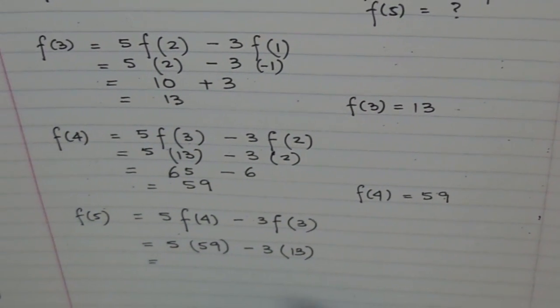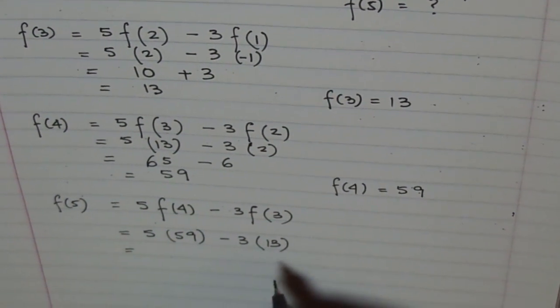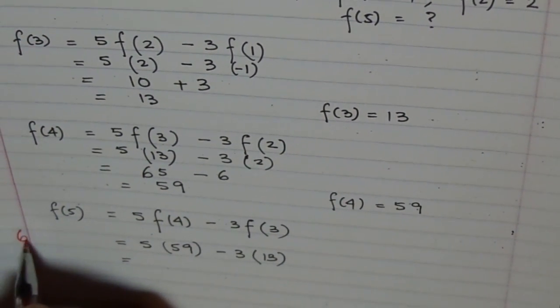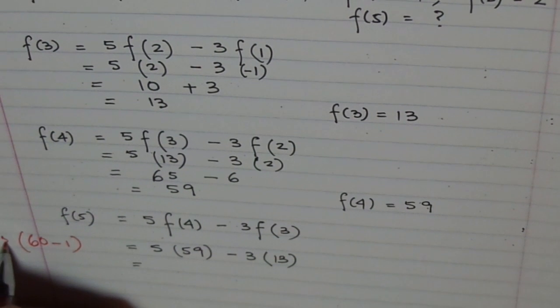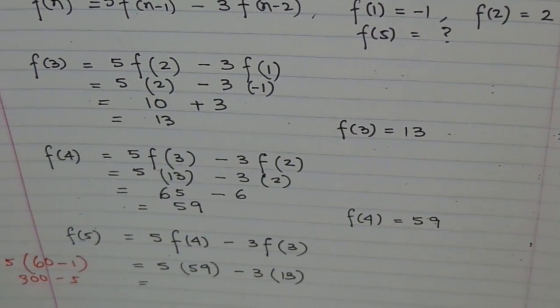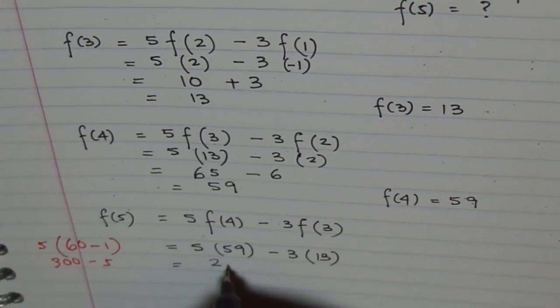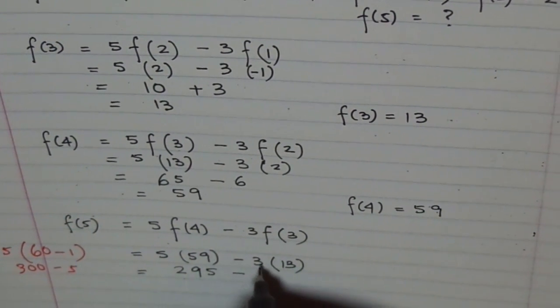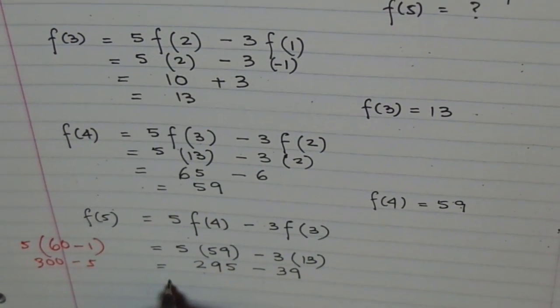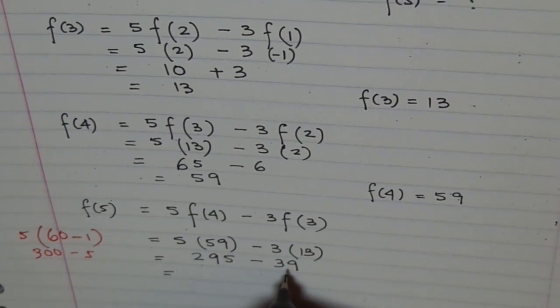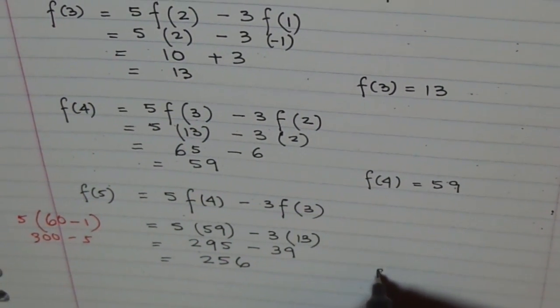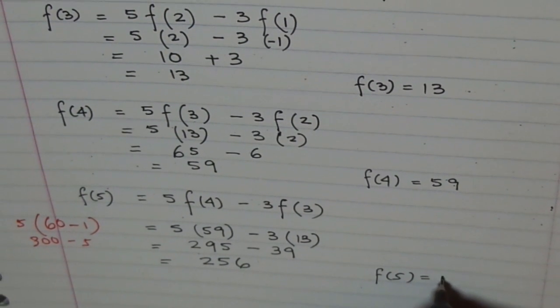So 5 times 59. You can do some easy calculation here. Like sometimes when the numbers are like this, you can treat 59 as 60 minus 1. 5 times 60 minus 1, and 5 times 60 is 300 minus 5, which is 295. So we can write this as 295 minus 3 times 13, which is 39. And 295 minus 39 will give you 256. So f(5) equals to 256.